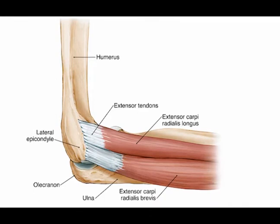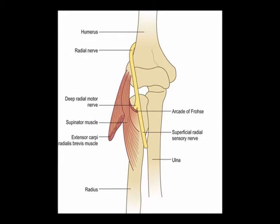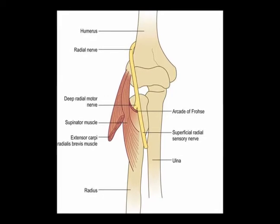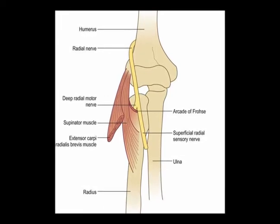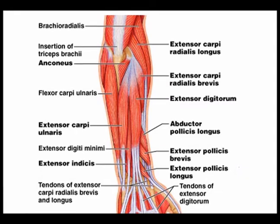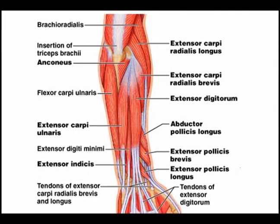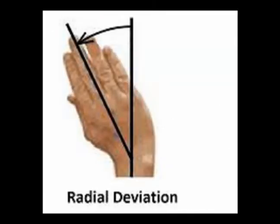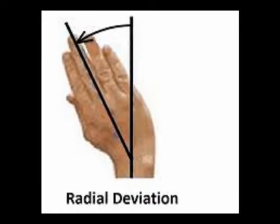The insertion is the dorsal base of the third metacarpal. The innervation is the deep branch of the radial nerve from vertebral levels C7 and C8. And the concentric actions of the extensor carpi radialis brevis are wrist extension and radial deviation.